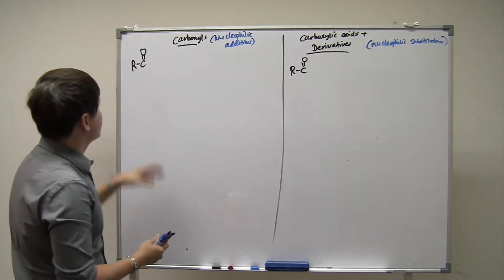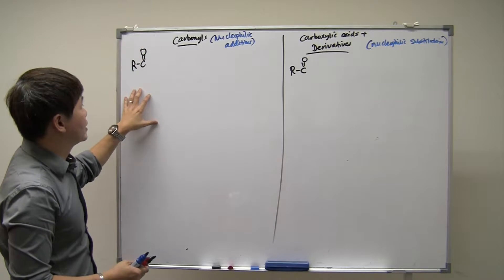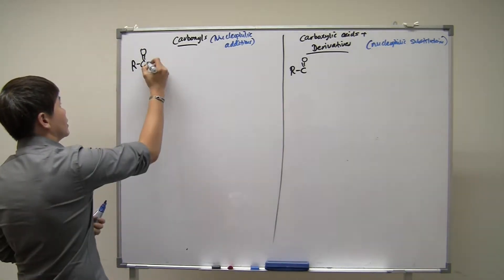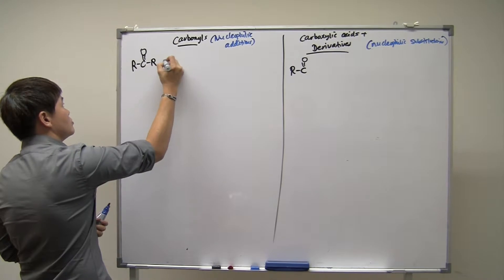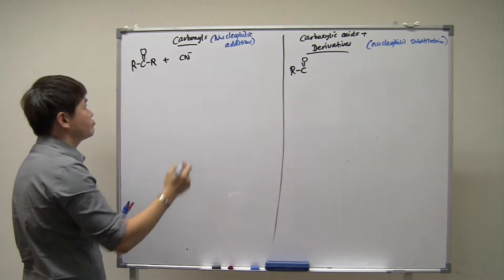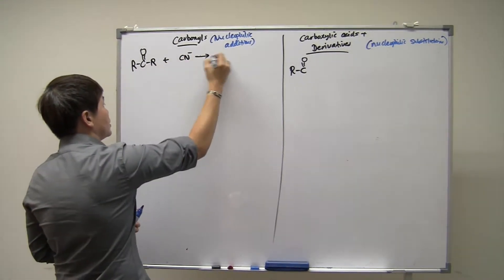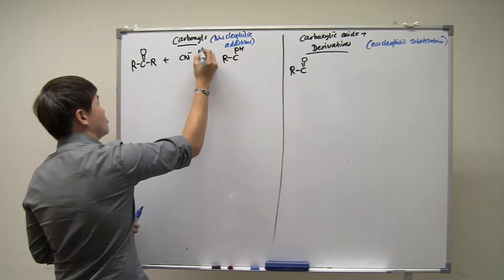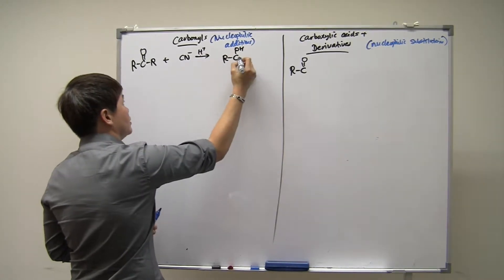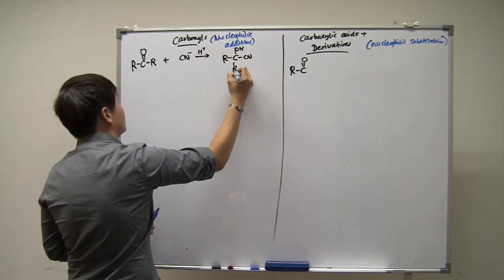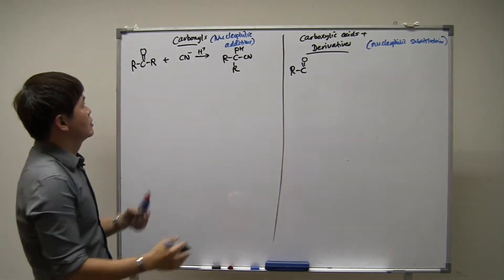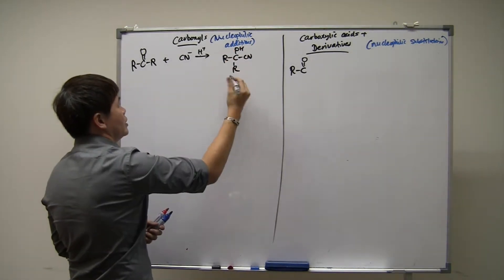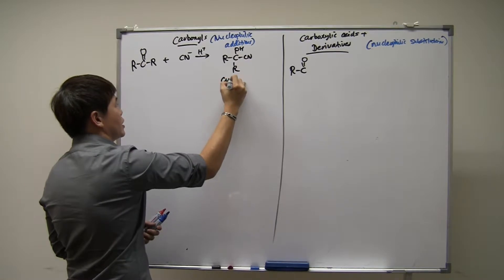Let's revisit the carbonyls chapter. We learned previously that carbonyls react with nucleophiles like cyanide, and with some protons coming in, they form a compound like this — two things add together to form only one product. This is called cyanohydrin.